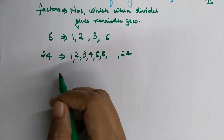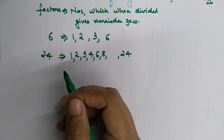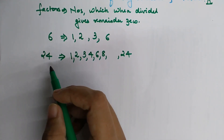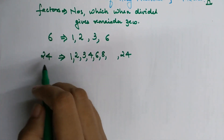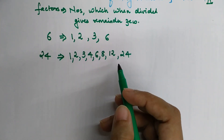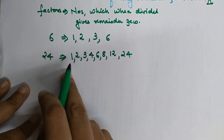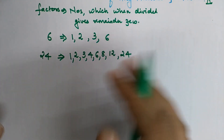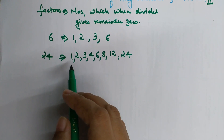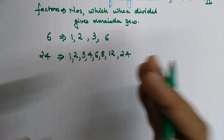10 does not divide 24 completely. Now, you might wonder why I stop at 12. The reason is: when finding factors of any number, you only need to find factors up to its half. Since 2 into 12 gives you 24, and anything less than 2 is 1 — which we've already covered — we take factors only up to the half of the number.